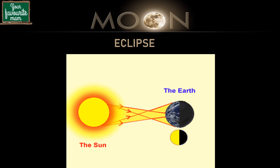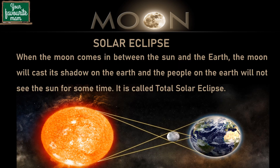Let's take up solar eclipse first. When the moon comes in between the sun and the earth and they all lie in the same plane, the moon will cast its shadow on the earth and people in some areas will not be able to see the sun for some time — it is called a total solar eclipse. A partial solar eclipse, however, is when the moon does not completely cover the sun.